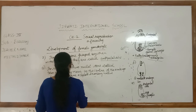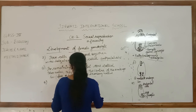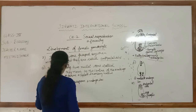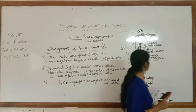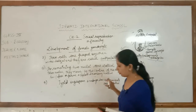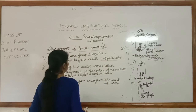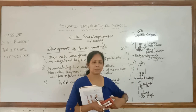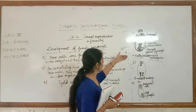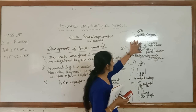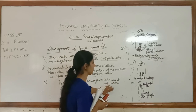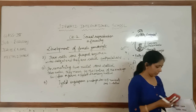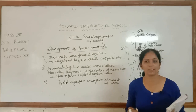So the typical angiosperm embryo sac is eight-nucleate and seven-celled. Today we discussed the development of the female gametophyte: one nucleate to two nucleate, opposite poles, three cells forming antipodal cells, female gametophyte, egg cell, two polar nuclei fusion — the typical angiosperm embryo sac is fully developed as eight nuclei and seven cells. Next lecture we will discuss pollination. Goodbye, thank you.